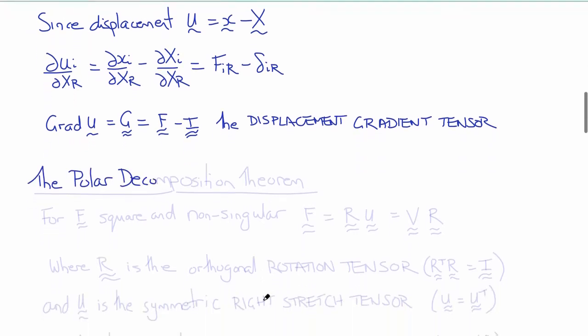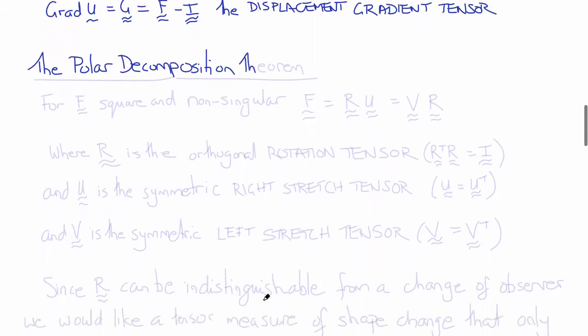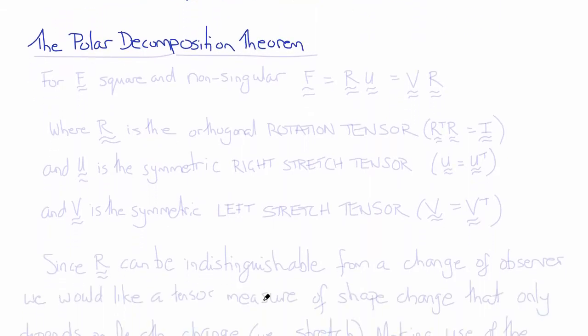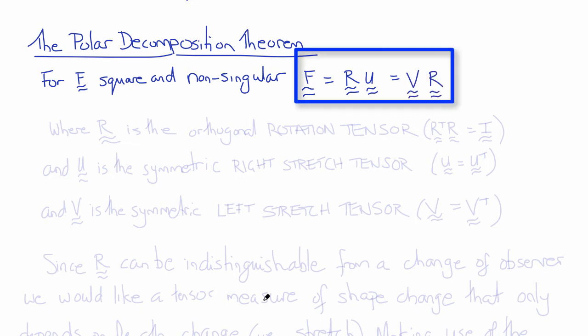But it's the deformation gradient tensor that we'll use most, and that's thanks to the polar decomposition theorem. The polar decomposition theorem states that for a matrix or tensor such as F, that is square and non-singular, it can always be decomposed into the product of R, an orthogonal rotation, and U, a symmetric tensor. Or, alternatively, the product of the symmetric tensor V times R, the orthogonal rotation.